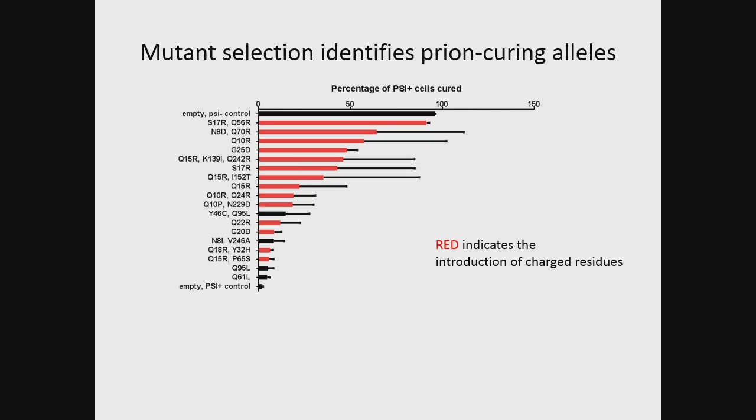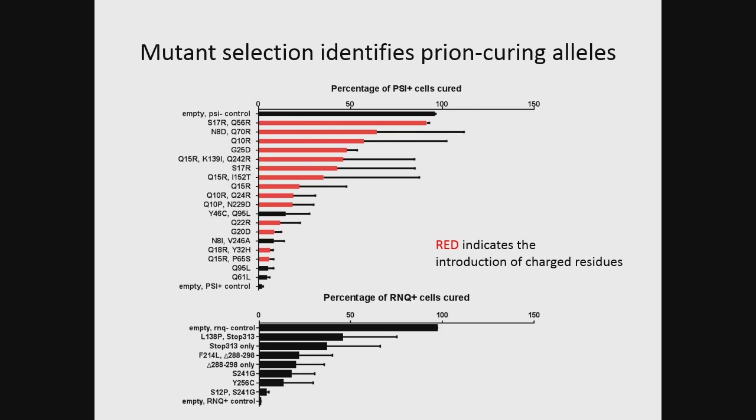Likewise we did the same thing for rink. We were very surprised to see that despite these two prions propagating by similar mechanisms, it was very different classes of mutations that caused prion curing. For the psi prion, it's mostly charged residues introduced in the aggregating domain. But for rink, it was truncations and deletions that were most active. This tells us that not all aggregates are born the same, and you might need a different bullet to target each one. Notably, one mutation — deleting 10 amino acids from the prion domain of rink — is actually harbored by some wild strains, and we think that strain in nature would mate with partners and be able to cure that lineage of rink.